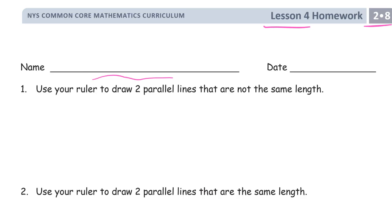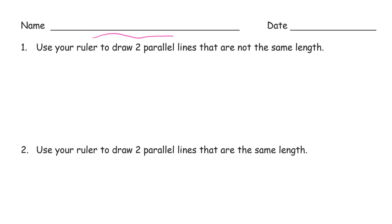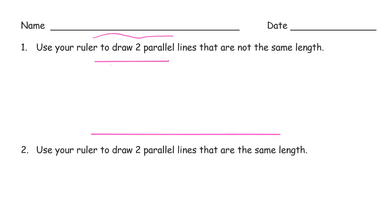Use your ruler to draw two parallel lines that are not the same length. If you have a ruler you can just put it right on top and draw above and below the ruler, because most rulers are thin enough to fit. I want to try to get the endpoints to match up like I would if it was a tape diagram. There — those are parallel and not the same length, and I'll draw two that are the same length.